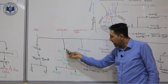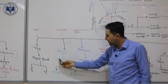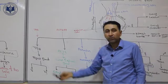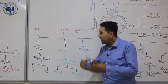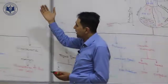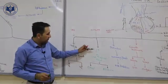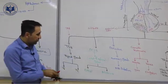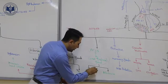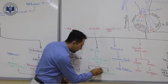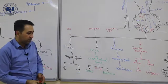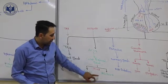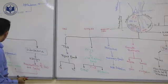The target cell of ACTH is the cortex of the adrenal gland. The adrenal gland consists of two regions: cortex and medulla. ACTH stimulates the cortex — not the medulla — to produce two steroid hormones made from cholesterol: cortisol and aldosterone. Their functions will be discussed later.